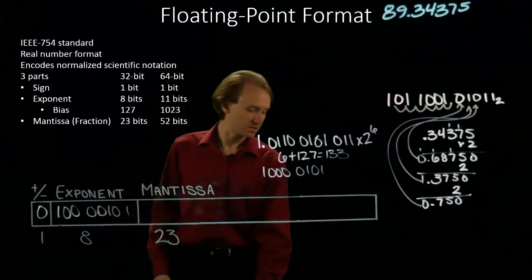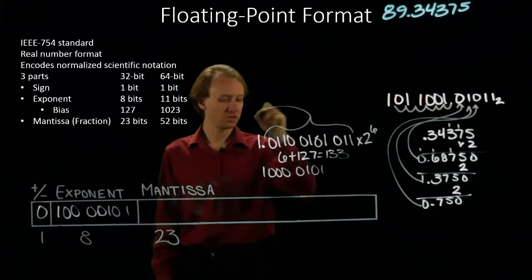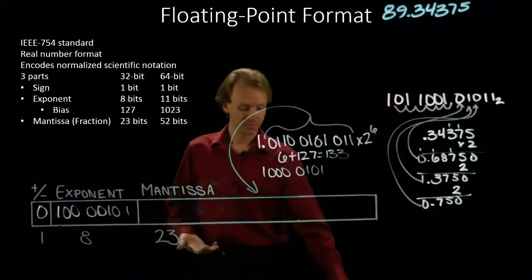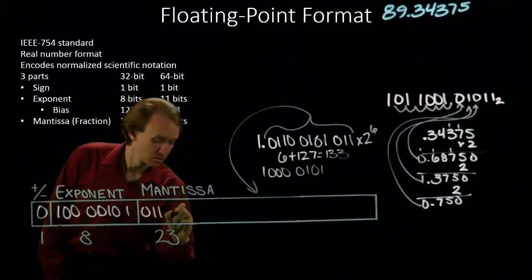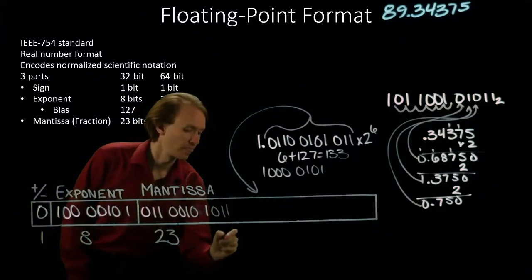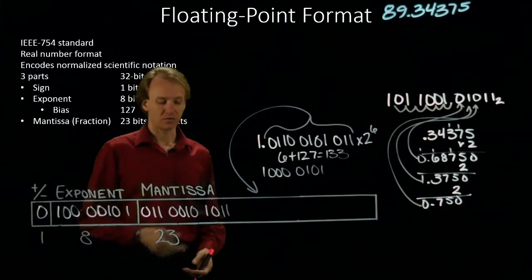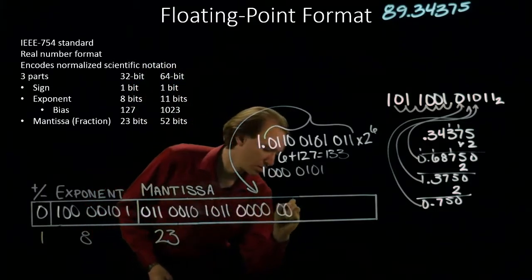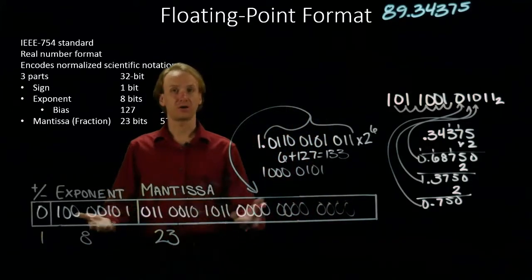And lastly, I need my mantissa. So, as usual, I will take everything that's after the binary point and copy that in for my mantissa. And then, I will fill in the right-hand side until I've got my full 23 bits. I've used 11, so I'll need 12 more.